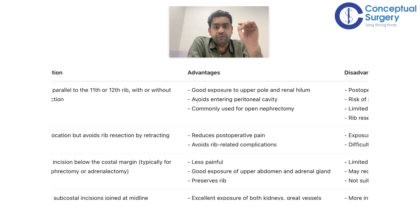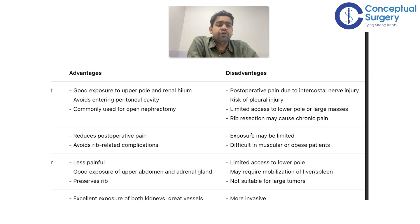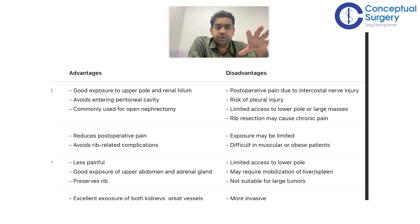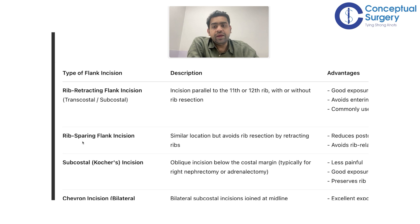The rib-cutting incision avoids entering the peritoneal cavity and is commonly used for the open nephrectomy. However, its disadvantages include post-operative pain due to intercostal nerve injury from cutting the 12th rib, risk of pleural injury since you are close to the pleura, limited access to the lower pole or large renal masses — if there is a lower pole tumor, you will have difficulty with inferior kidney dissection — and rib resection may cause chronic pain.